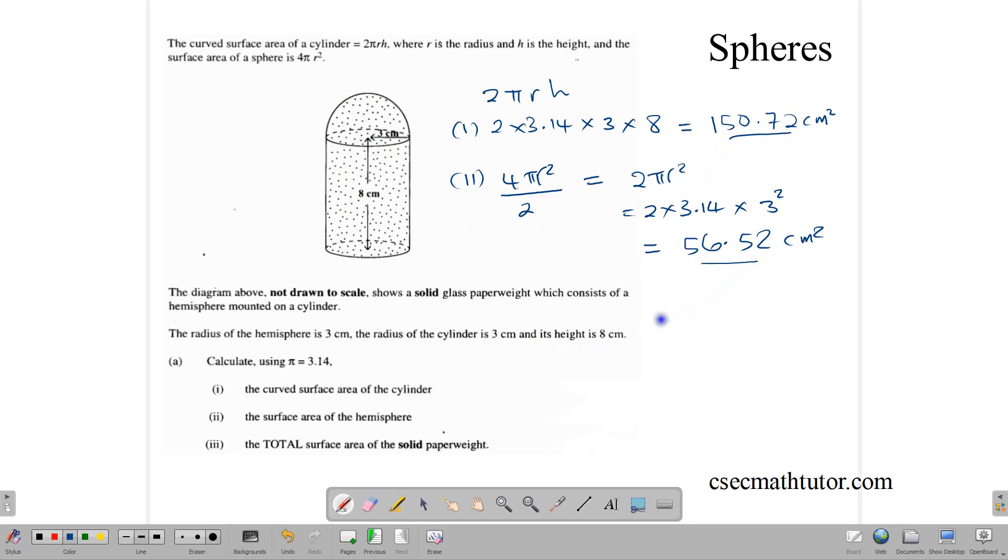So to find part three, we simply add those two answers, 150.72 + 56.52. And that gives us a total of 207.24 cm².